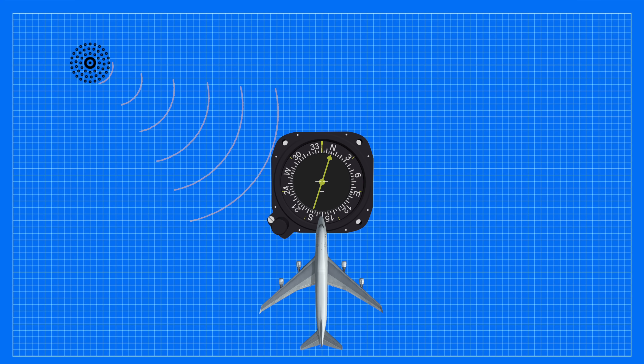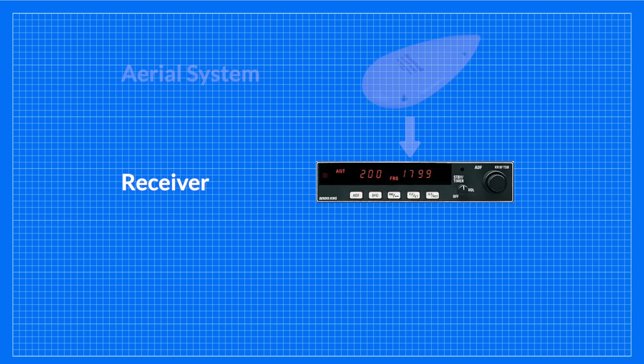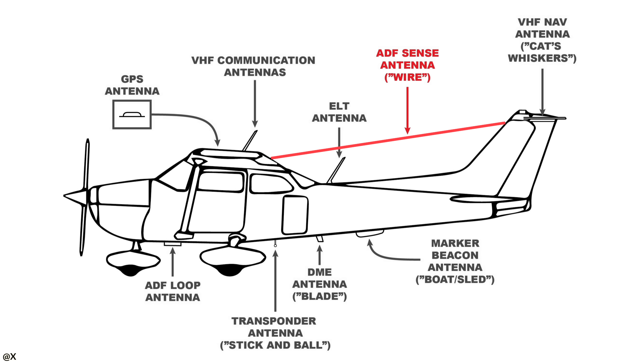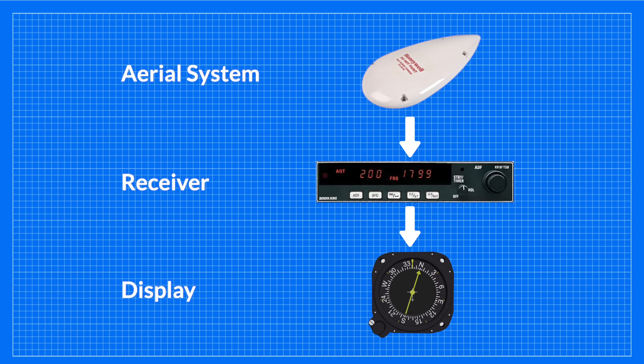Now that we have found our direction with the NDB, how does our aircraft tell us where to go? The Automatic Direction Finder operates on the radio compass principle, meaning it points the directional needle toward where the NDB signals are coming from. There are three components within the aircraft that make up an ADF: the receiver, where the frequency is tuned to match the NDB; the aerial system, made up of a loop aerial and a sense aerial, which work together to identify exactly where the NDB signals are coming from — on older aircraft this antenna is often called the 'washing line' as it ran from the vertical stabilizer to the roof of the cockpit; and the ADF display, located among the cockpit instruments.